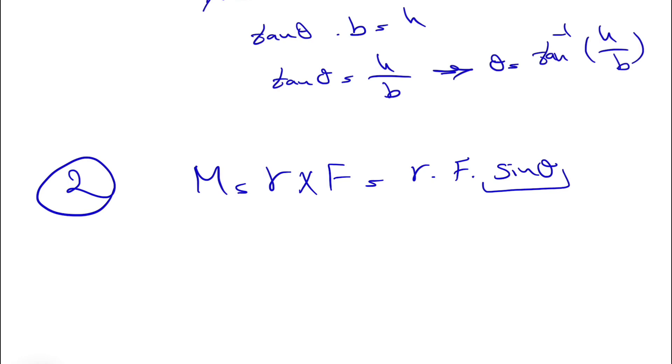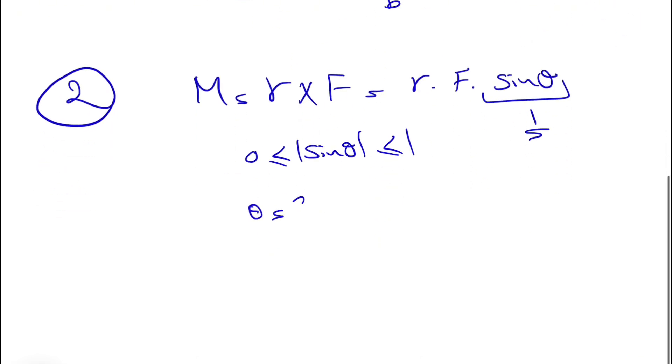We know sine, or actually the absolute value of sine, is something from 0 to 1, which means the highest value that we can have for sine is 1, meaning our theta has to be 90 degrees. If that's the case, this means that r has to be perpendicular to F.